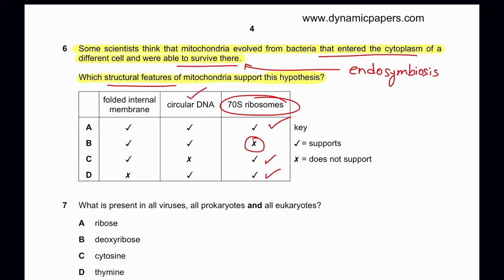Circular DNA — yes, definitely, because as an early bacterium, mitochondria have circular DNA. So options A and D are still correct. Folded internal membrane — mitochondria do have folded internal membranes, but a folded internal membrane does not tell us whether it is a foreign bacterium that entered another cell. So folded internal membrane must be crossed out — it does not support the hypothesis. Therefore D is the correct answer.